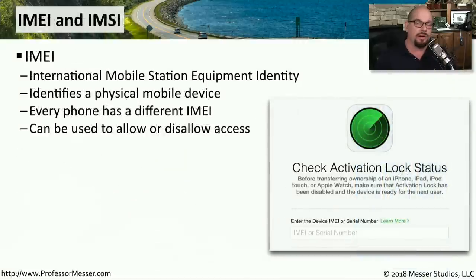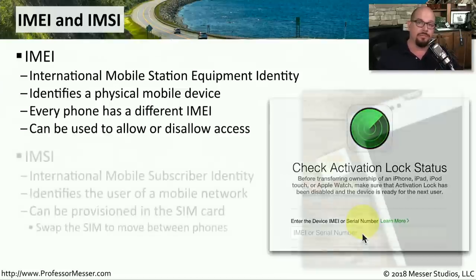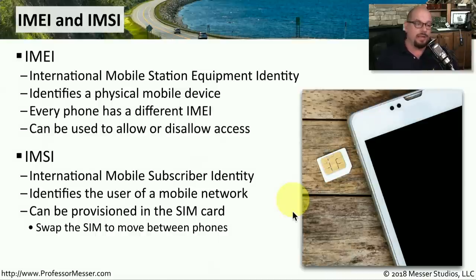Every mobile device on wireless carrier networks can be tracked through a unique code called an IMEI — International Mobile Station Equipment Identity Code. Every smartphone has a different IMEI, so your wireless carrier can allow or disallow access based on this value. If you're purchasing a phone, you may want to check the IMEI to make sure it's not locked. A different type of identifier is an IMSI — International Mobile Subscriber Identity. This identity is associated with you and not with the mobile device. This IMSI can be provisioned in the SIM card, which means you can move the SIM card between different phones and still maintain access to your wireless provider's network.